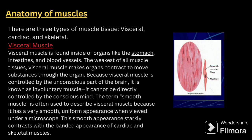Next comes the anatomy of muscles. In anatomy of muscles, we have three types of muscle tissue: visceral, cardiac, and skeletal muscle. When it comes to visceral muscle, it is found inside the organs like stomach, intestine, and blood vessels. Visceral muscle is the weakest of all muscle tissue and makes organs contract to move substances through the organ. Because visceral muscle is controlled by the unconscious part of the brain, it is known as involuntary muscle — it cannot be directly controlled by the conscious mind. Visceral muscle is often called smooth muscle because it appears very smooth and uniform when viewed under a microscope.